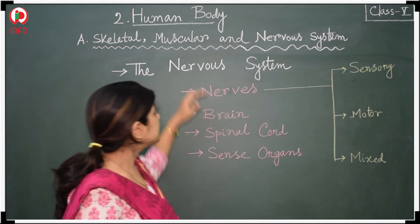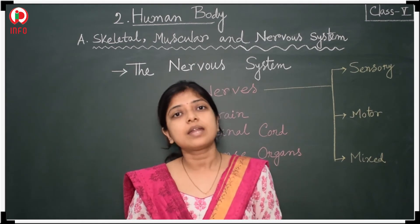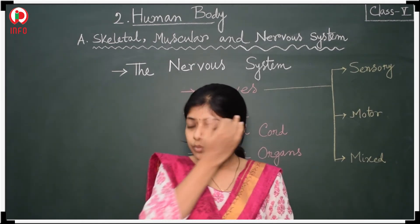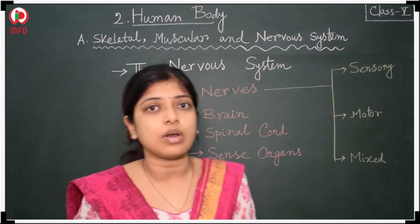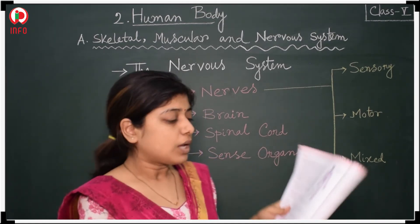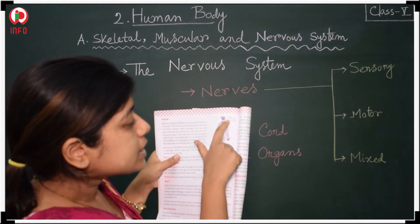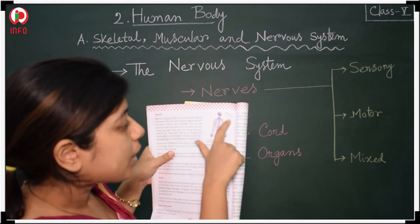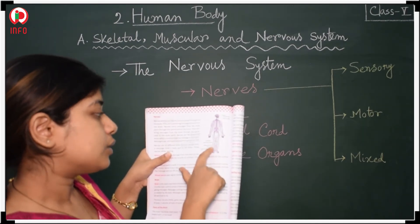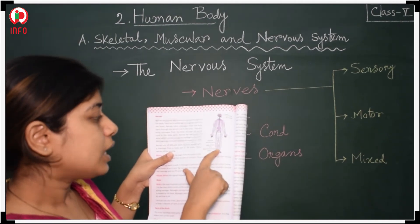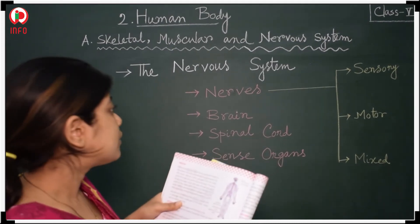Our nervous system nerves are acting like a telephone. In our daily life, we use the telephone, and these nerves do the same role in our body. Have a look at this picture: this is our brain, this is the cerebellum, this is the spinal cord, this is the common peroneal nerve, the deep peroneal nerve, and the superficial peroneal nerve. These are the different nerves in our nervous system.